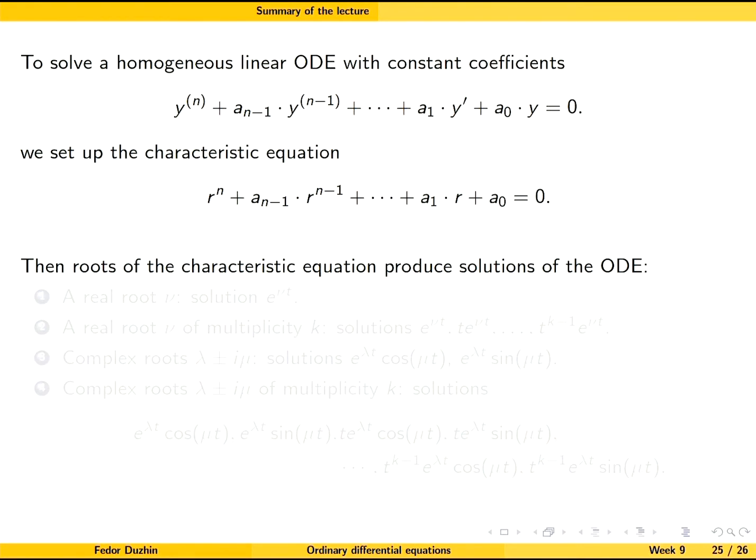It's similar to the second-order case. Every real root gives us a corresponding exponential solution. If it has multiplicity k, we multiply by t, t squared, and so on, to get k linearly independent solutions.